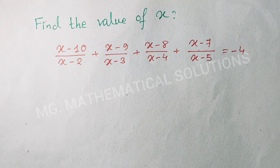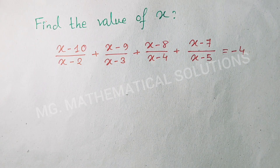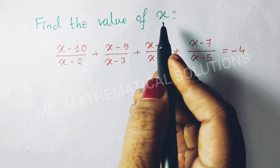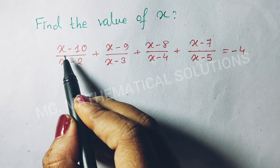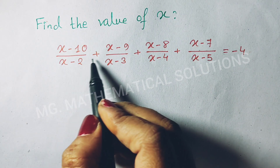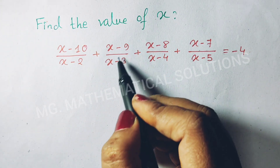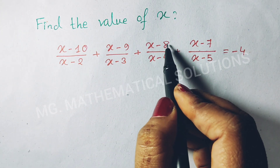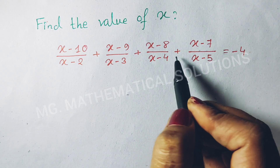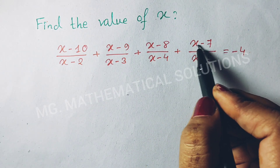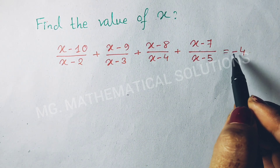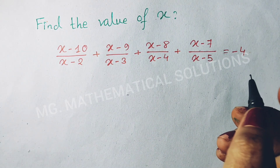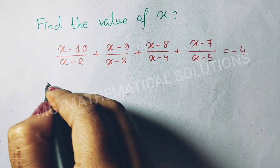Hello students. Today I solve a hard algebra problem, which is: find the value of x for the equation (x-10)/(x-2) plus (x-9)/(x-3) plus (x-8)/(x-4) plus (x-7)/(x-5) equal to minus 4.